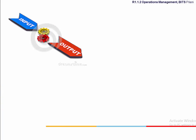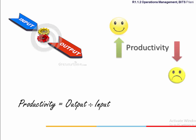Productivity is the amount of output that can be realized using a set of inputs. Numerically it is expressed as the ratio of the output to the input. Hence, higher the productivity, better is the operations performance. An airline that can comfortably fly more people for the same cost has better productivity.